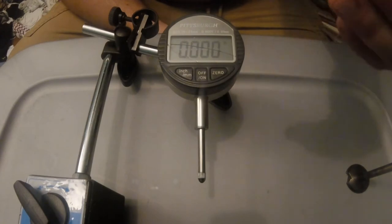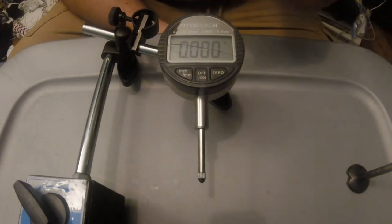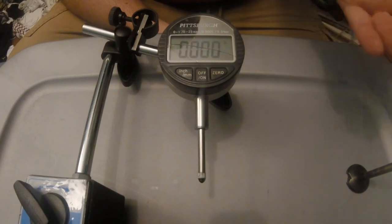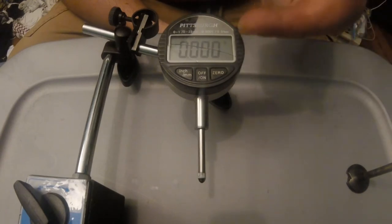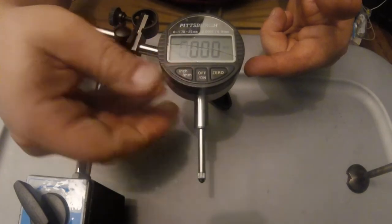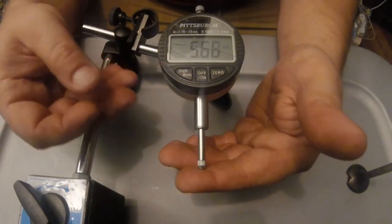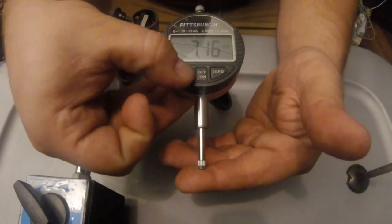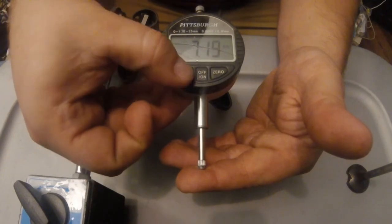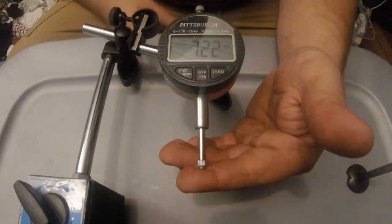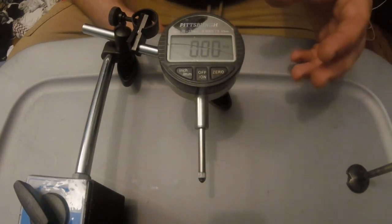They have a manual version. This is digital. It does take batteries. You know, you can get what you want. I chose the digital one for the easy screen reading and because you can bounce back and forth between, you can do a quick conversion between metric and inches. So, that's pretty nice. And, you can zero it wherever at the push of a button.